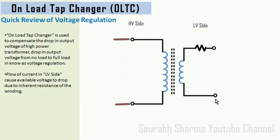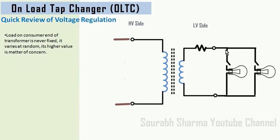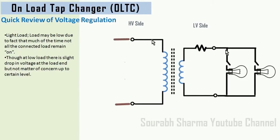Suppose we have a distribution transformer at the load end, so it must be a step-down transformer, and a number of loads are connected to the secondary winding. This represents the internal impedance of the secondary winding. When the transformer is on no-load — that means all connected loads are off — however the transformer is in working condition, meaning it is energized from the HV side. In this condition, the output voltage will be exactly equal to the voltage induced in the secondary winding, because no current is flowing; therefore, whatever be the impedance of the secondary winding, no voltage will drop.